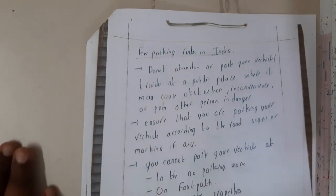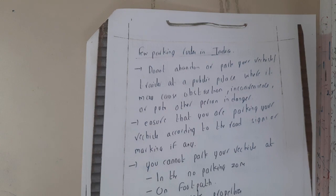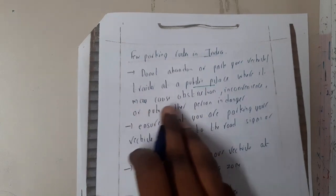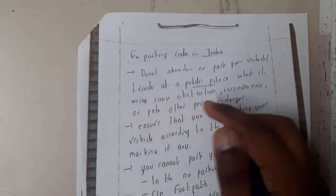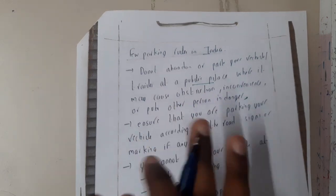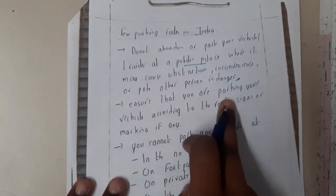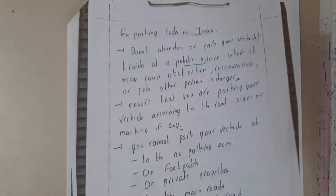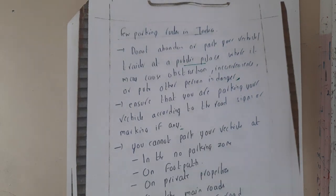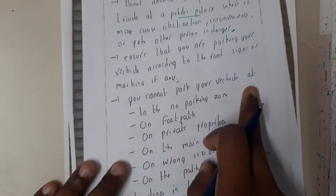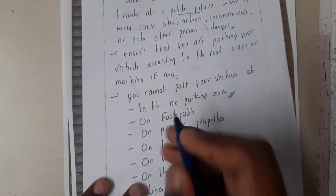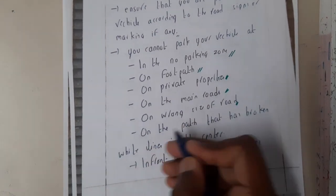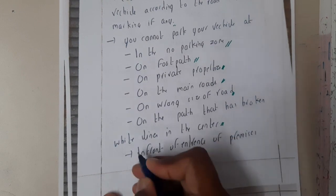Now let us go through a few parking rules in India. Do not abandon or park your vehicle or trailer at a public place where it may cause obstruction or inconvenience. Ensure that your vehicle is parked according to road design or markings, if any — your vehicle should be inside the marked area. You cannot park in a no-parking zone, on footpaths, on private property, or on main roads.